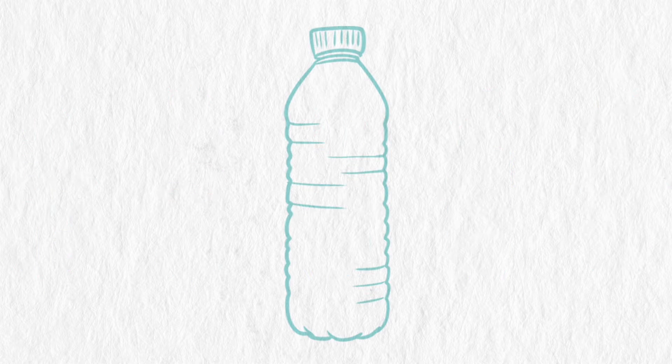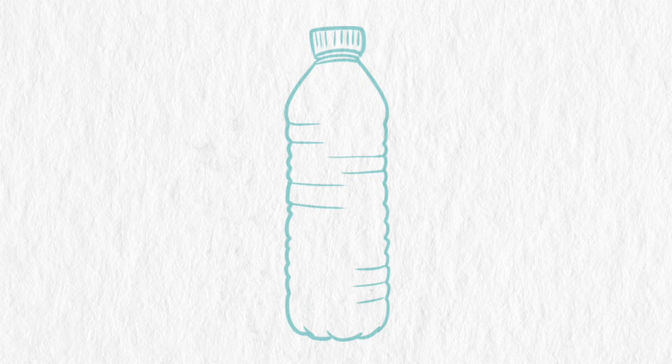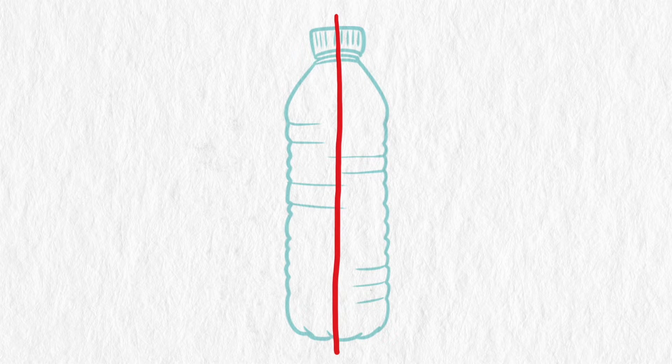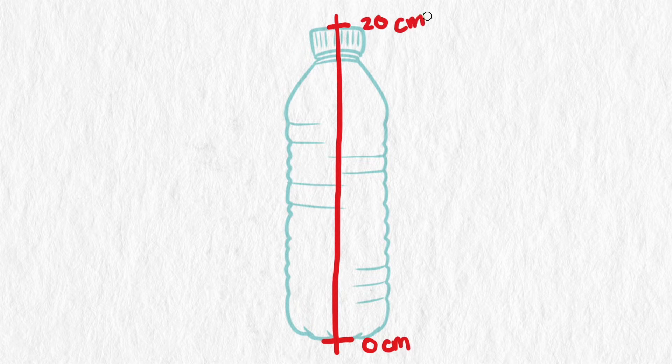To calculate the heights of the center of gravity, we use coordinates and a weighted average. We can put a scale on our bottle so we have coordinates to work with. Let's use the height in centimeters as our scale, with height at 0 at the bottom and a height of 20 at the top.